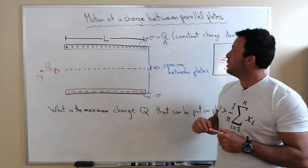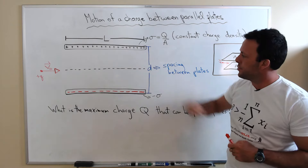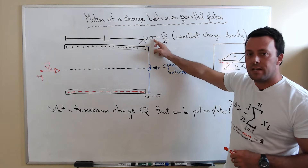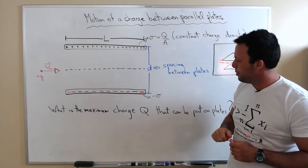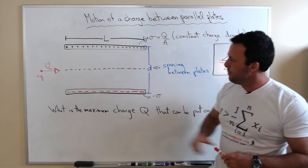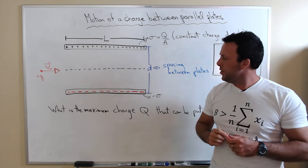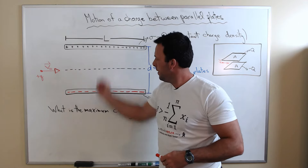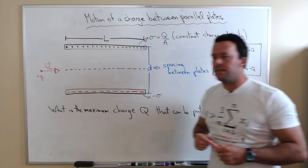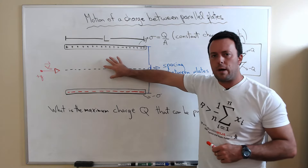Today I want to look at the motion of a charged particle traveling between parallel plates. I've illustrated the problem over here on the board. We've got two plates: one is positively charged with a charge density plus sigma, the other is negatively charged with the opposite charge. We have a small particle with a charge Q moving into the region where there's a constant field, and the initial velocity is V₀.